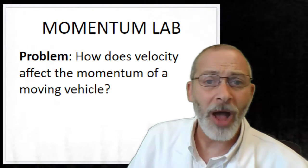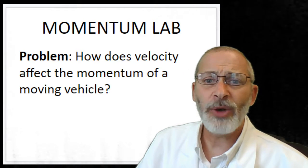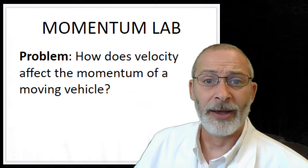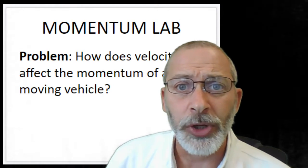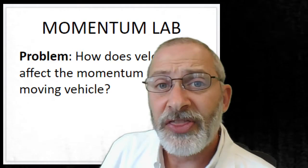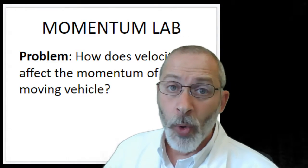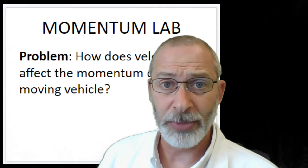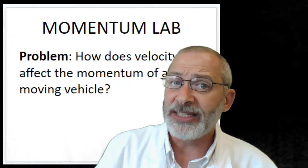The problem of our lab today on page 34 is: how does velocity affect the momentum of a moving vehicle? Think back to yesterday when we were using the example of the elephant and the mouse. It was evident that the more massive an object, the more momentum it has — that is a relationship between mass and momentum. But today's lab is asking a slightly different question.